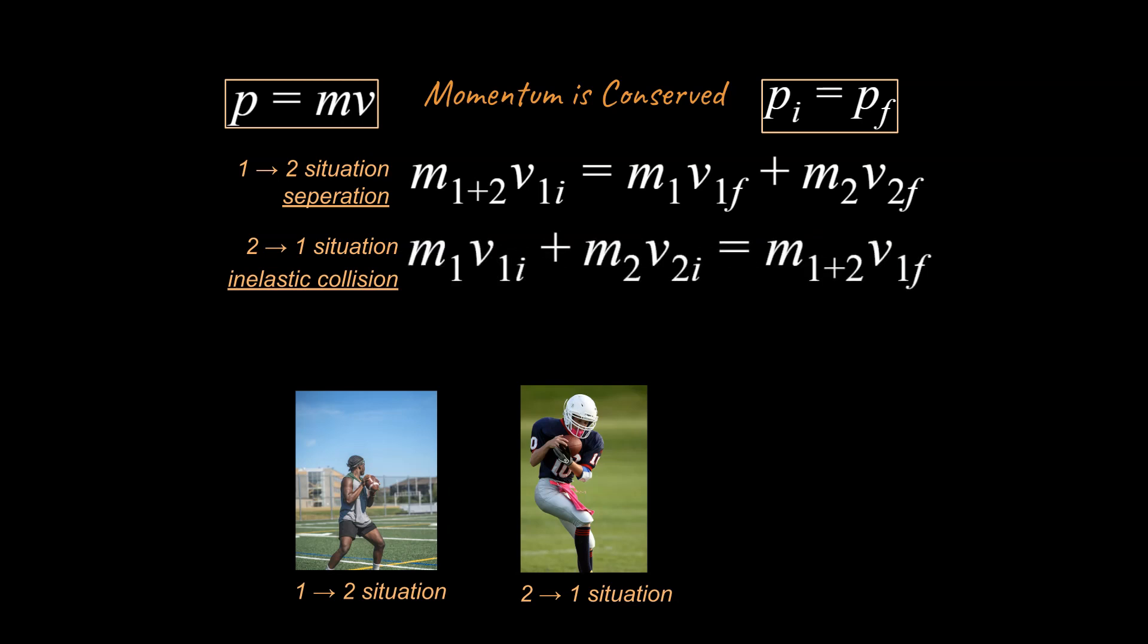It's going to look like this: m1v1 initial plus m2v2 initial equals m1 plus 2—so you add together these masses—times v1 final. In other words, after this guy catches the ball, he's going to move with the football kind of like one object in terms of momentum. We add the mass of the football to his mass, and we can solve the problem.